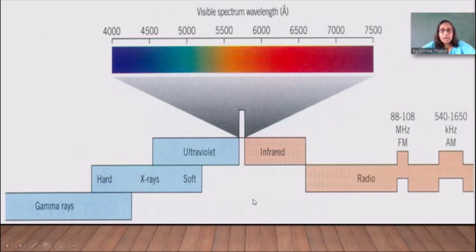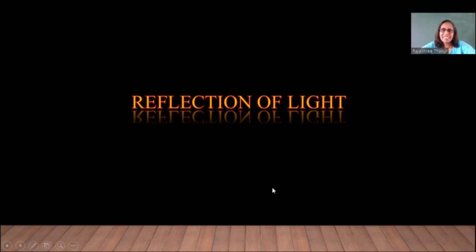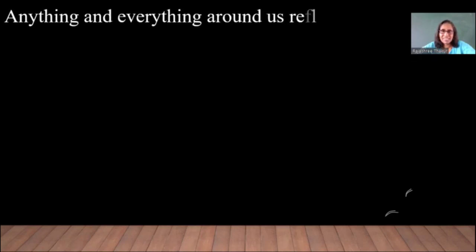Of course, many other creatures can see other parts of the spectrum, but humans cannot. Now, reflection of light — anything and everything around us reflects light. If that was not the case, we wouldn't have seen the objects around us. It is only because the light gets reflected from those objects that we can see them.